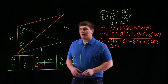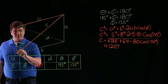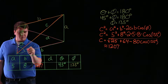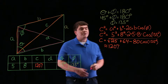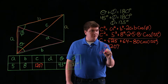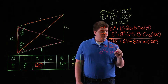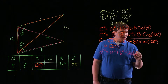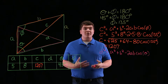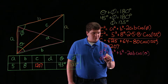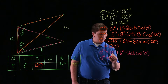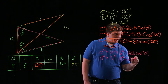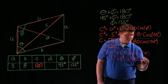And finally, to solve for D, we'll consider the triangle which includes the angle theta. And using the law of cosines, we have D squared is going to be equal to A squared, plus B squared, minus 2AB, times the cosine of theta. Substituting our values in, we have that D squared is equal to 5 squared, plus 8 squared, minus 2 times 5 times 8, times the cosine of 45 degrees.